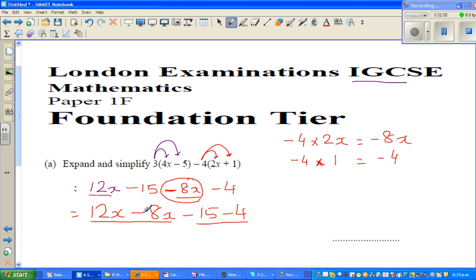So this is 12 lots of x, take away 8 lots of x, which is 4 lots of x. Then you've got a minus 15, minus 4.